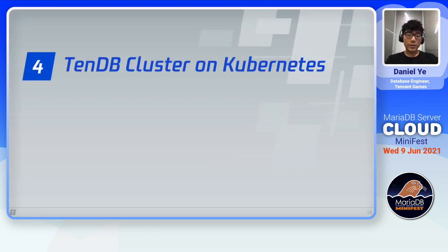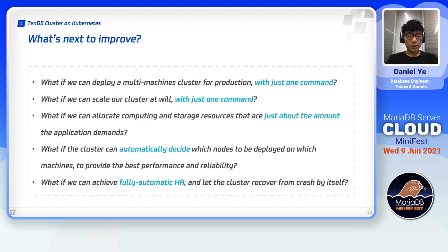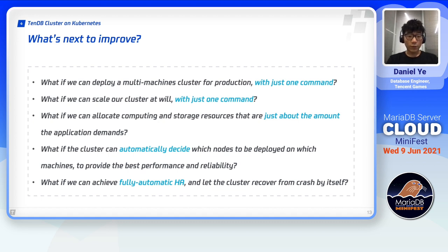There's one more thing. We are a team that never stops innovating. We sometimes look carefully at our TenDB cluster and wonder, can we make it better or use it better? We propose lots of what-ifs: What if we can deploy a multi-machine cluster that's ready for production with just one command? What if we can scale our cluster at will with just one command? What if we can allocate computing and storage resources to just about the amount the application demands? What if the cluster can automatically decide which nodes to deploy on which machines to provide the best performance and reliability? What if we can achieve fully automatic high availability and let the cluster recover from a crash by itself? These are very practical questions, and can really boost efficiency in production if solved. And at present, there's a wonderful solution to these questions — that is cloud.